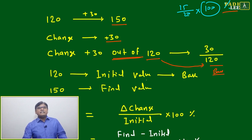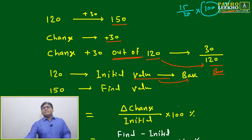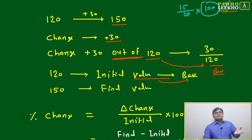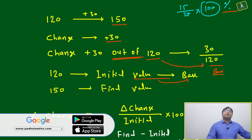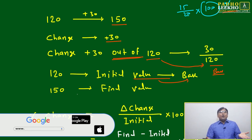The initial value will always be base, whatever you are starting with. Like here, 120 will be base if you are going from 120 to 150. If you are reversing the process and coming from 150 to 120, then 150 will become base.